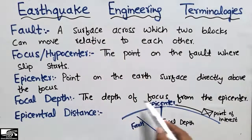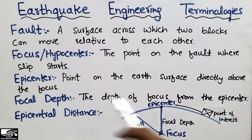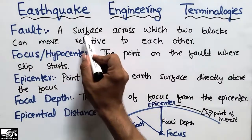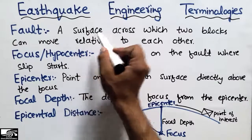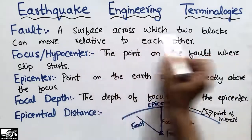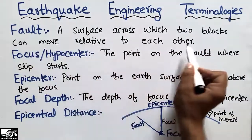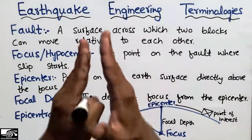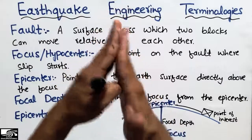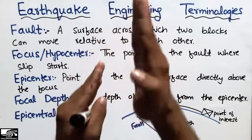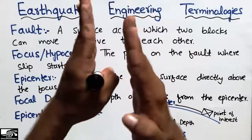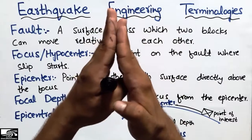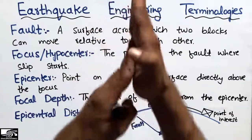I will explain each one with the help of this diagram. First, to define the fault: a fault can be defined as a surface inside the earth across which two blocks can move relative to each other. Consider these two rocks — they are allowed to move against one another.